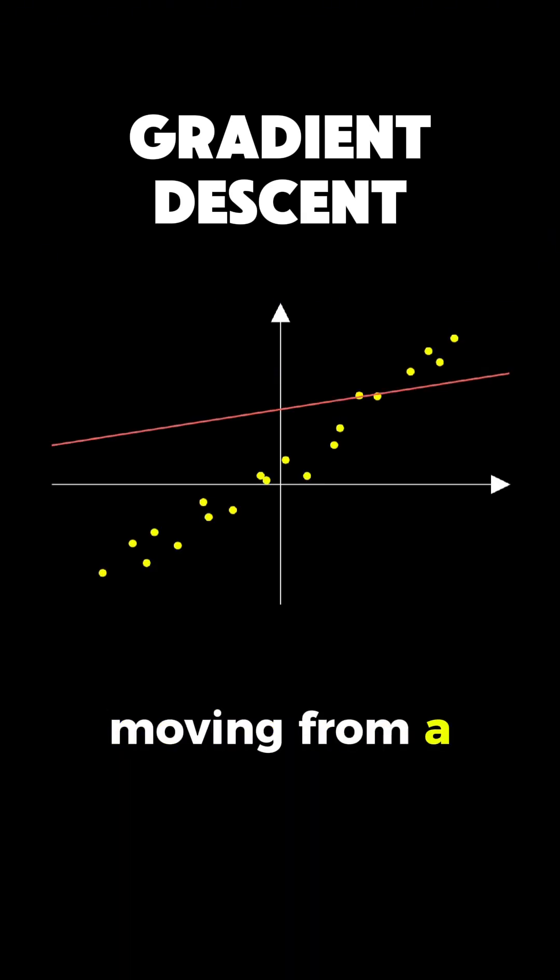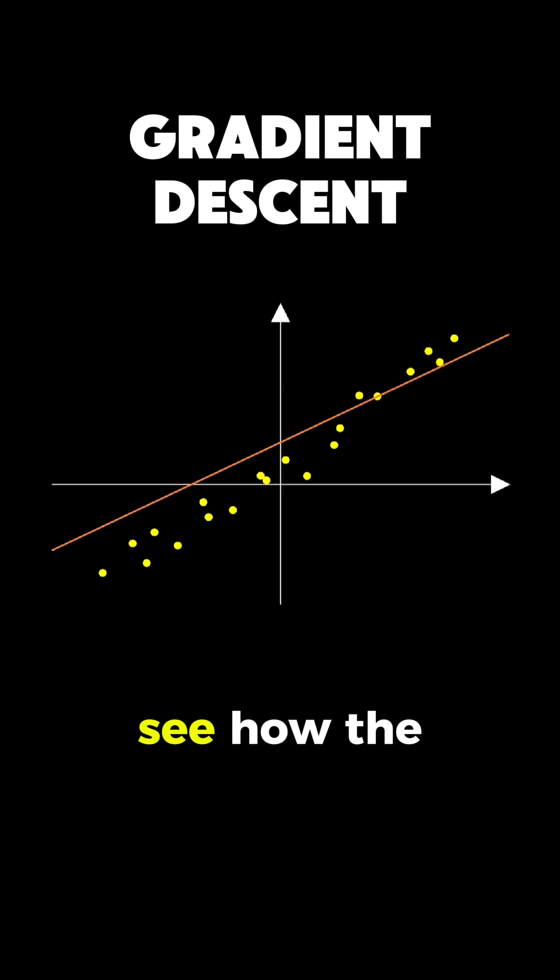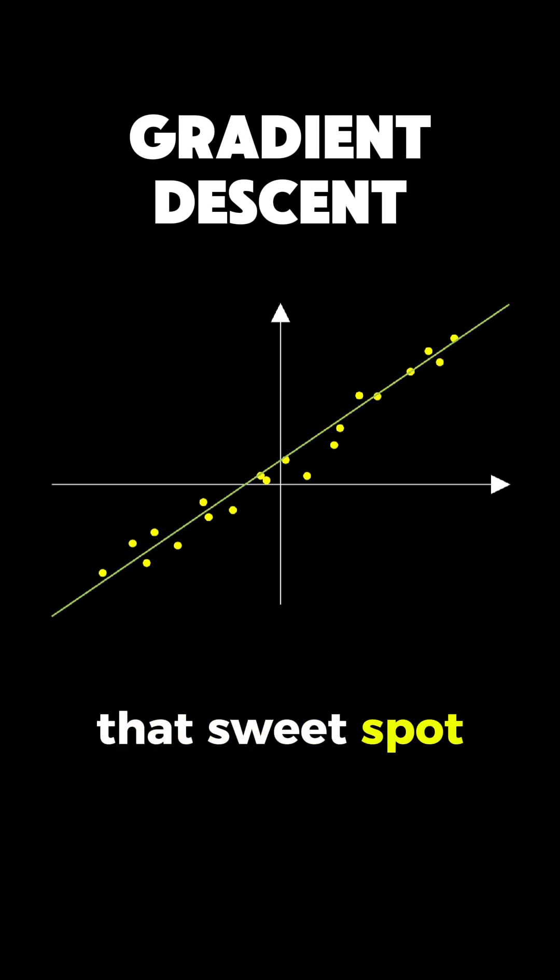Watch now as our line gradually improves its fit, moving from a poor initial guess toward the optimal solution. You can see how the red line transforms into green as it finds that sweet spot where the sum of squared errors is minimized.